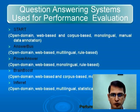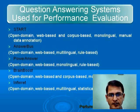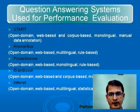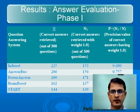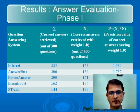I chose 5 different question answering systems for my evaluation: START, Answer Bus, Power Answer, Brain Boost, and Inferret. All are open domain and web-based, but they differ in technique and language coverage. START, Answer Bus, Power Answer, and Brain Boost are rule-based, but Inferret is statistical. START and Power Answer are monolingual; the others are multilingual. I gave them all 300 questions. Inferret gave the maximum number of correct answers — 225. START gave the least — 144. However, the precision of correct answers requiring least interpretation was by START: 139 out of 144.